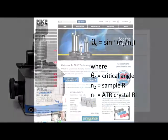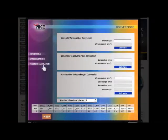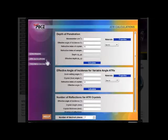To make this calculation easy, use Pike's FTIR calculator found on our website. Select the ATR tab located on the left-hand side of the program and scroll down.